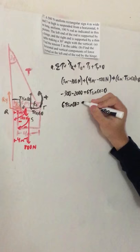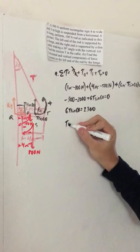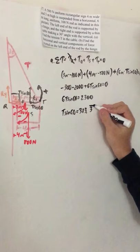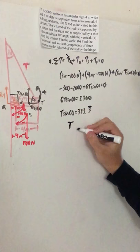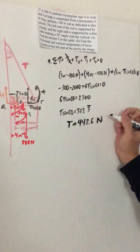And now what I have to do is 6T sine 60 equals 2300. And if we divide both sides by 6, we get T sine 60 equals 383.3 repeating. And if we divide both sides by sine 60, we get T is approximately equal to 442.6 newtons.